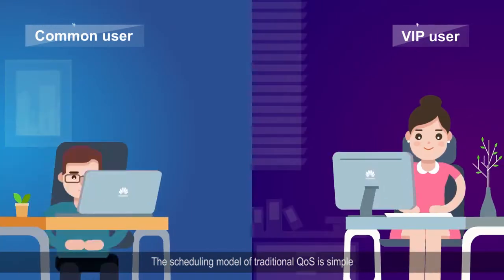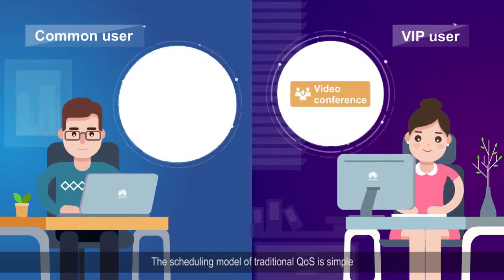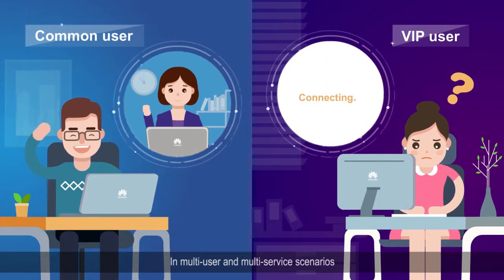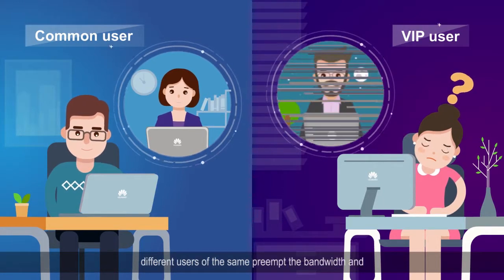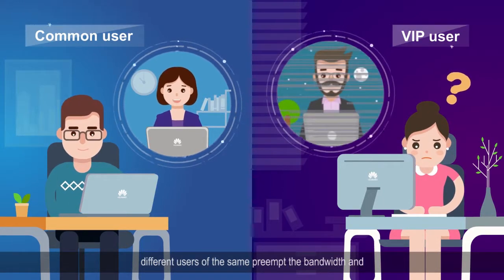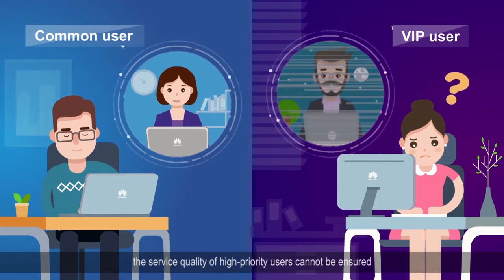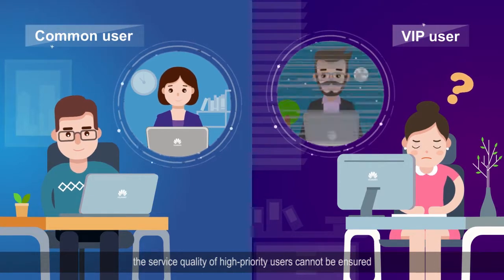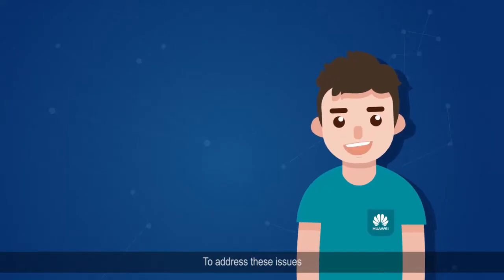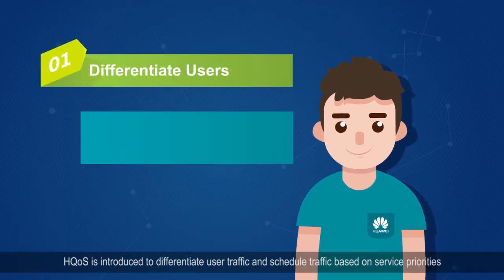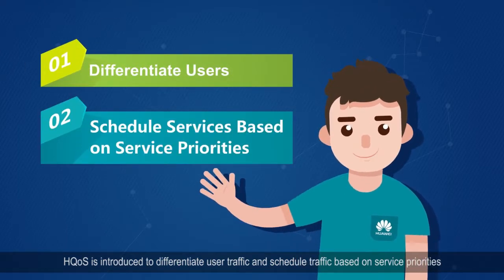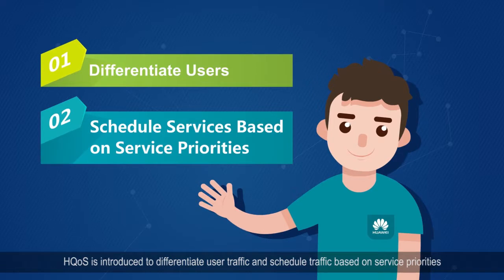The scheduling model of traditional QoS is simple. In multi-user and multi-service scenarios, different users compete for the same bandwidth, and the service quality of high-priority users cannot be ensured. To address these issues, HQoS is introduced to differentiate user traffic and schedule traffic based on service priorities.